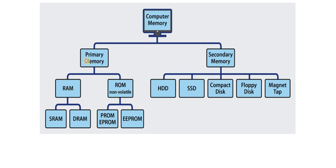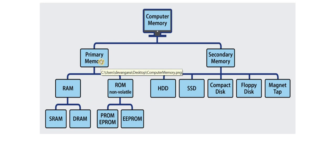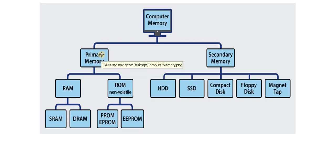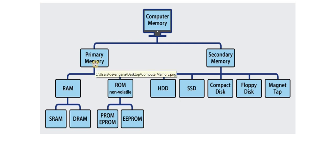Some characteristics of primary memory: these are semiconductor memories, also known as main memory. It is usually volatile memory — the data is lost if power is switched off. It is the working memory of the computer and it is faster than secondary memory. A computer cannot run without primary memory.